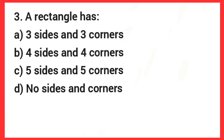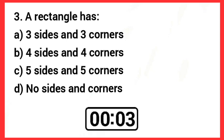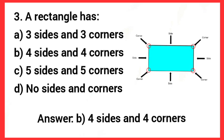Next one, a rectangle has blank sides and blank corners. Answer is Option B, 4 sides and 4 corners.